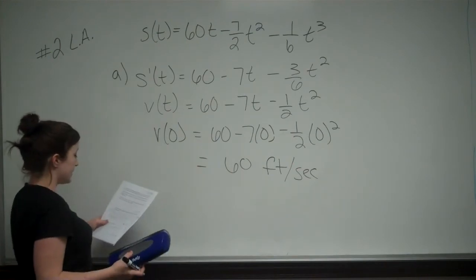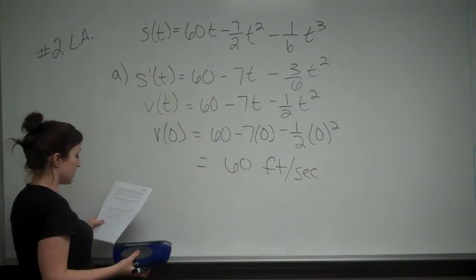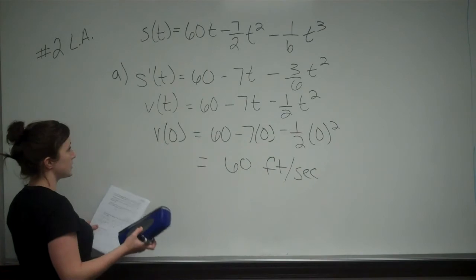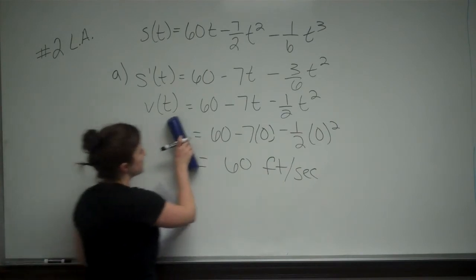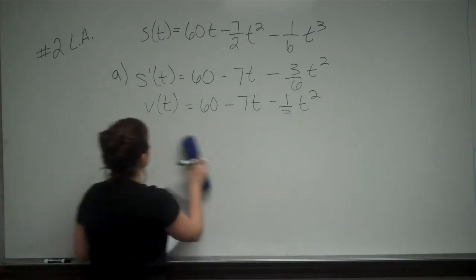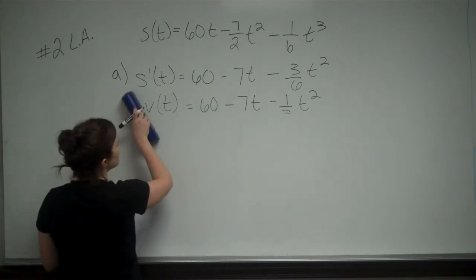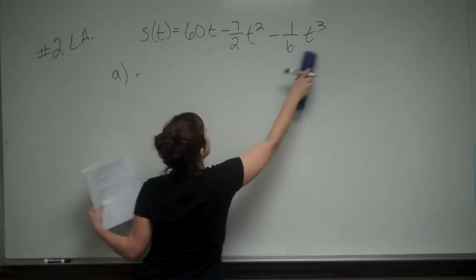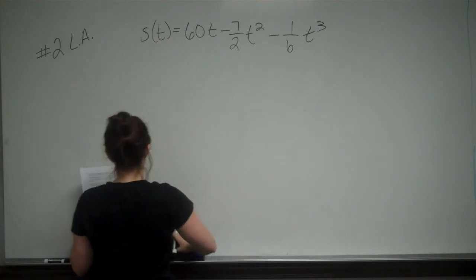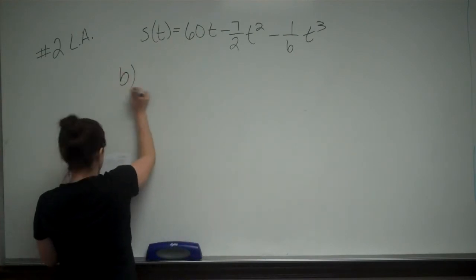Part B says, now find the time it takes for the car to stop. Hint, what is the velocity at that time? So I'm going to leave our velocity formula, because that is what we're going to use. I'm going to actually just re-write it.